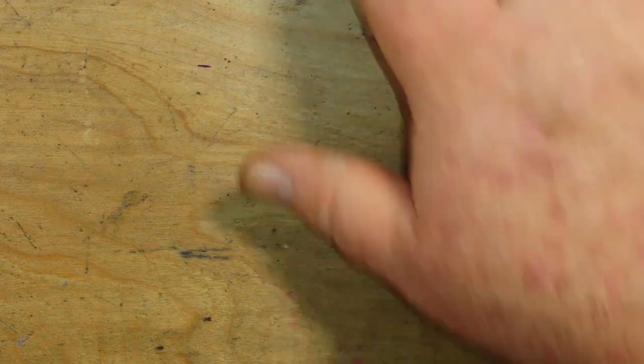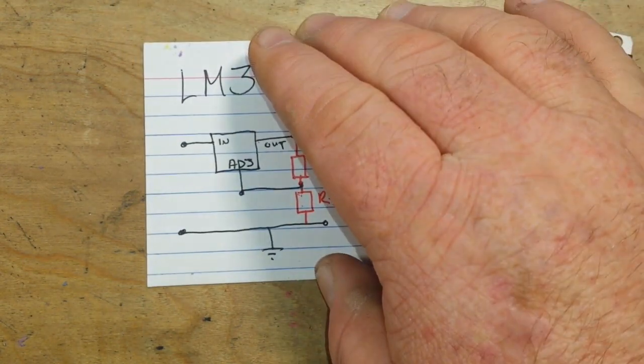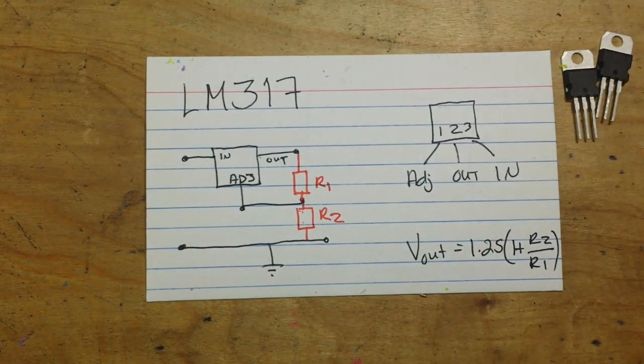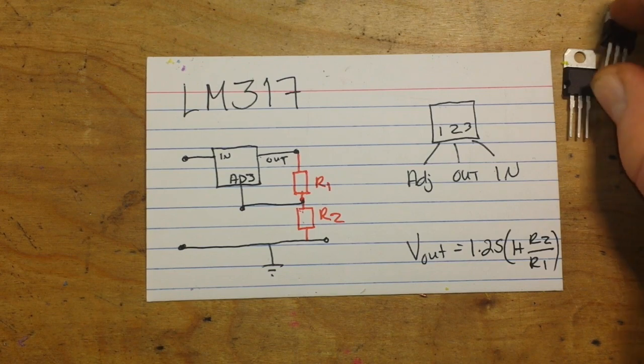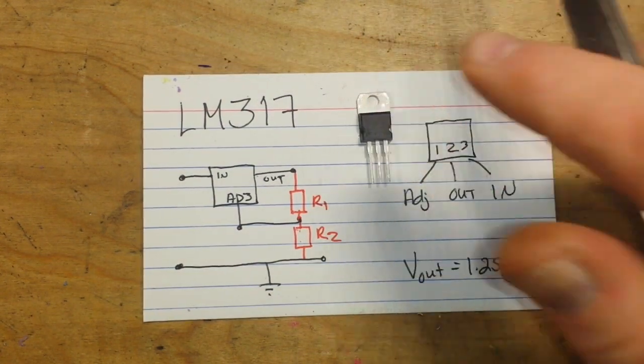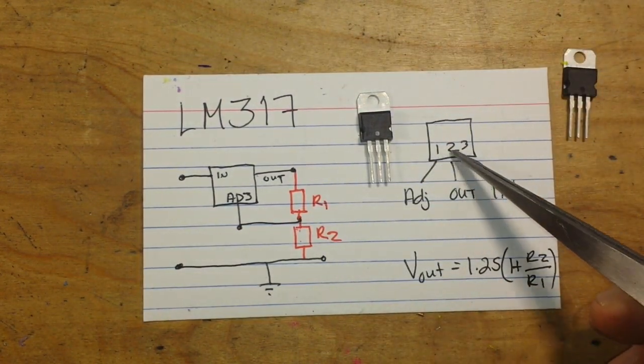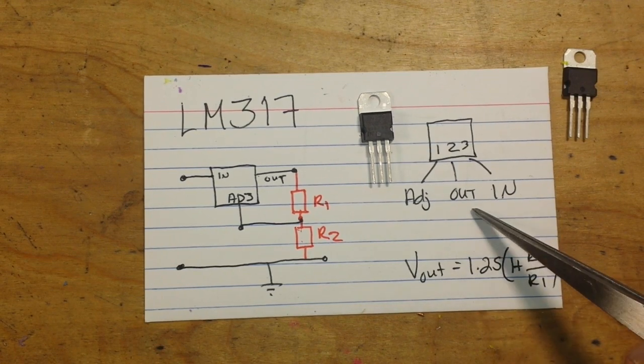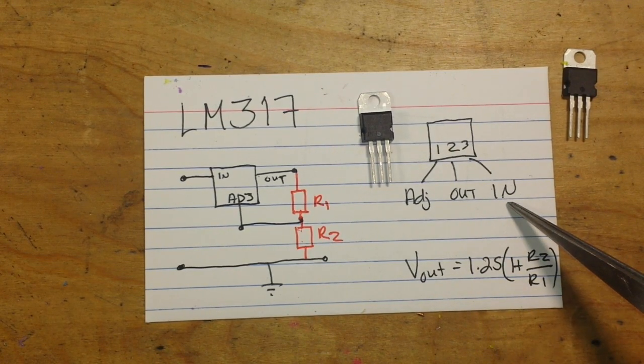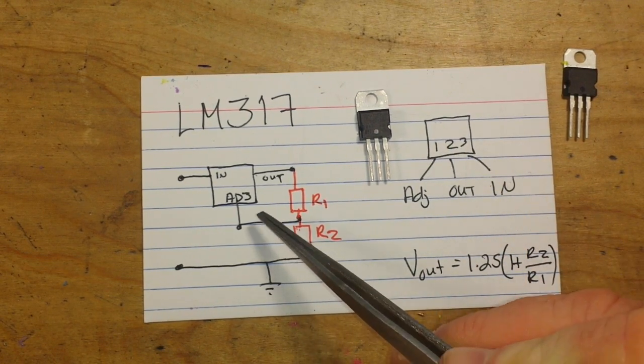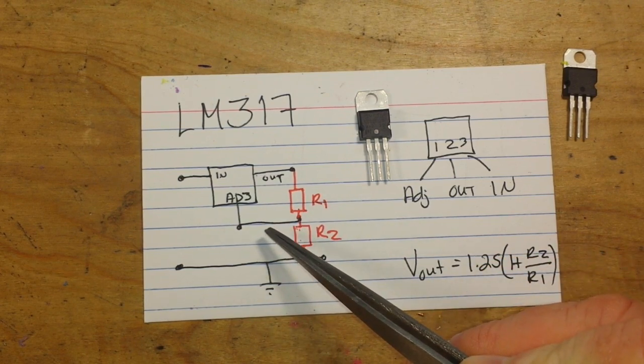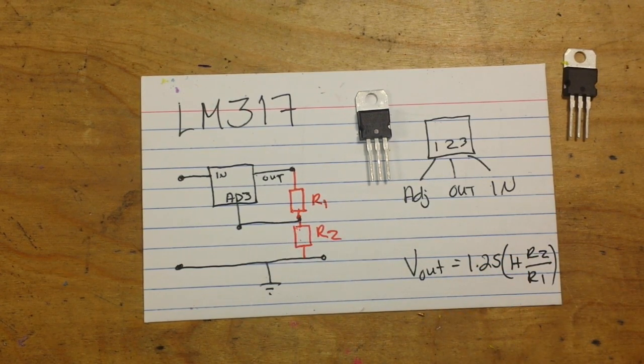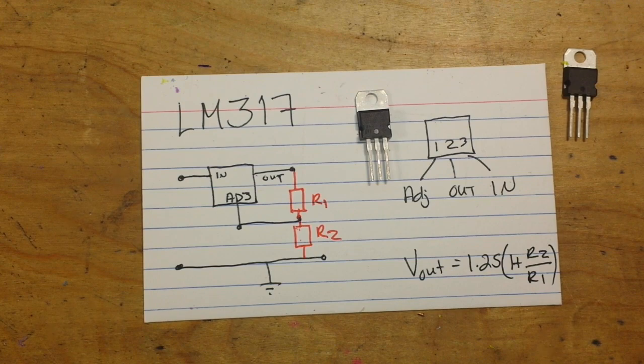But let's take a look at this here real quick on this handy little drawing I've made. So you see we've got our three pins, 1, 2, and 3, they are adjust, out, and in. And by setting up this really simple little circuit right here, we can create a nice stable adjustable voltage regulator.